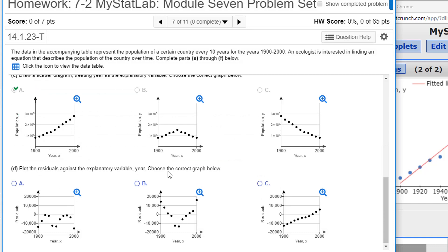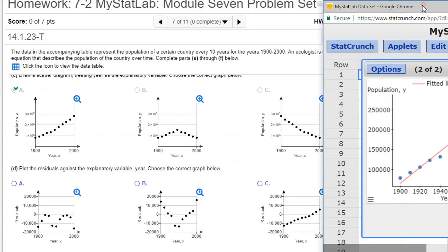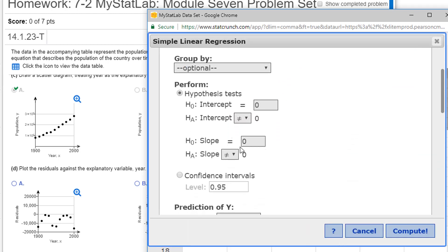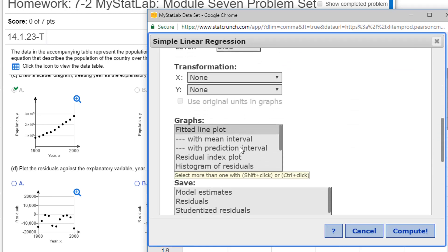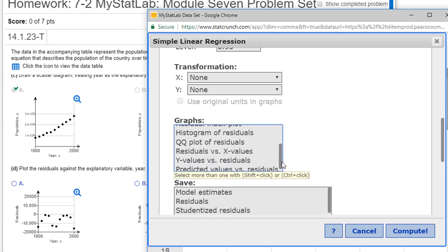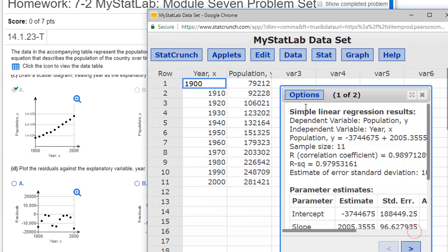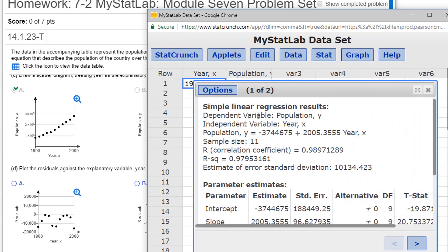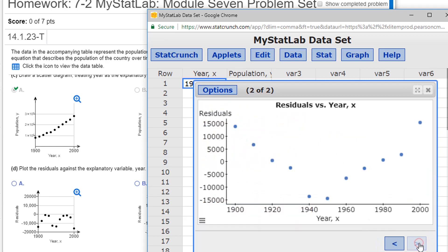Plot the residuals against the explanatory variable. Well, let's do that. To get the residuals, I need to go back to my options and I'm going to go down here and see Graph. I want to graph the residuals versus X values. That's a graph I want to create. Now when I click compute, it'll create that as my graph in the second page. Let's try to make this a little bit bigger. Second page, these are my residuals versus the year.